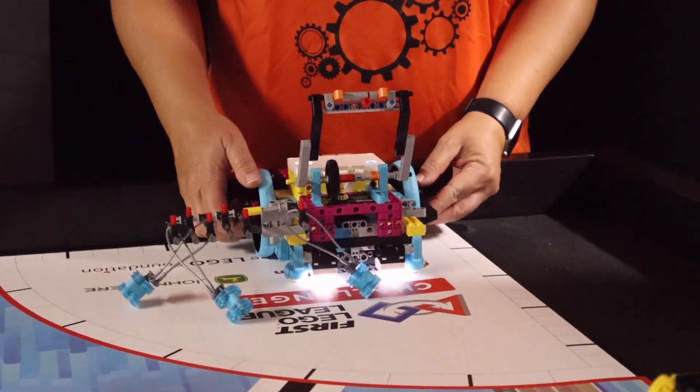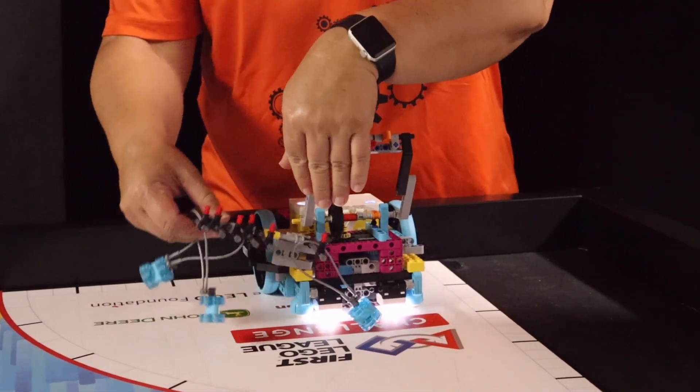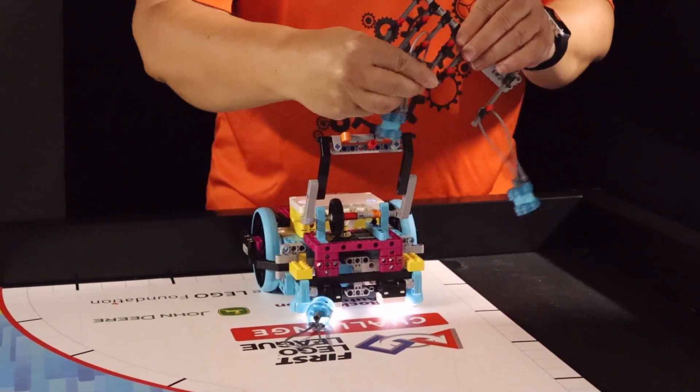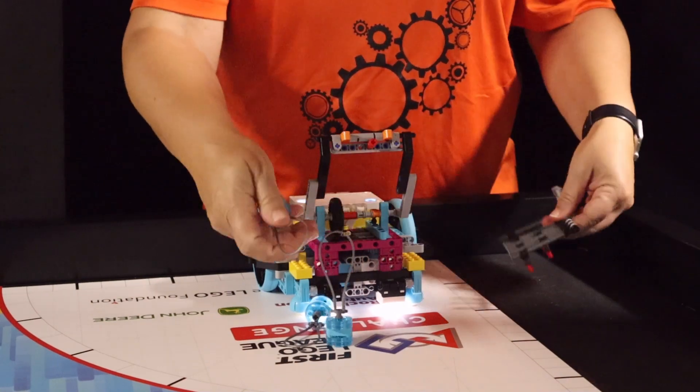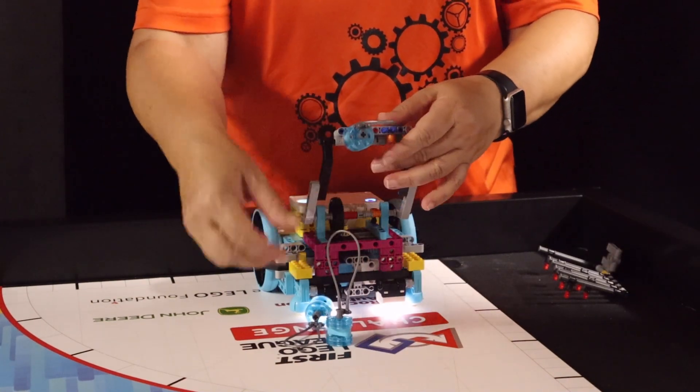There, a technician repositions the robot and places two of the water units with the loops sticking out almost horizontally on the front of the bar attachment. The third water unit is placed on the red hook of the attachment.